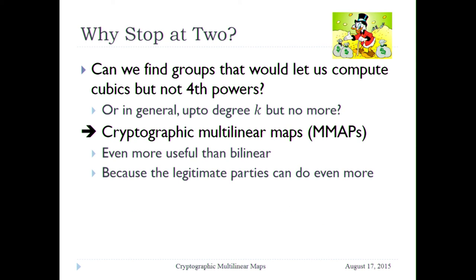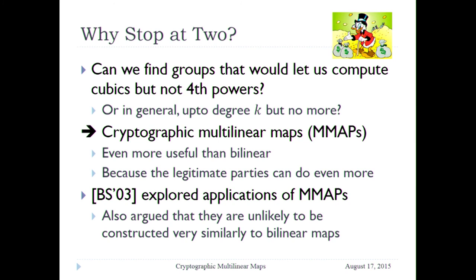So why stop at two? Can we find groups that would let us compute cubics in the exponent but not fourth powers? Or in general, for every k as a design parameter, let us compute k-th powers but not k+1. This is what multilinear maps are, at least in their pure form. If we have it, it is more useful than bilinear for exactly the same reason — the legitimate parties can do more. Soon after the pairing revolution, Boneh and Silverberg explored that option, sketched some applications of multilinear maps if we had them, and also argued that the exact same way you build a bilinear map is probably not going to give you anything more than two.